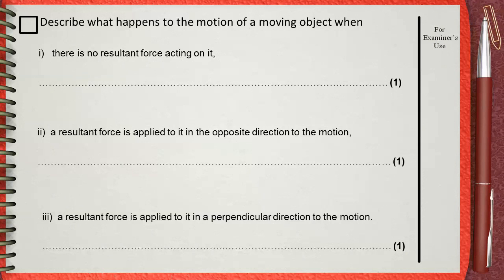Describe what happens to the motion of a moving object when: I — there is no resultant force acting on it; II — a resultant force is applied to it in the opposite direction to the motion; III — a resultant force is applied to it in a perpendicular direction to the motion.